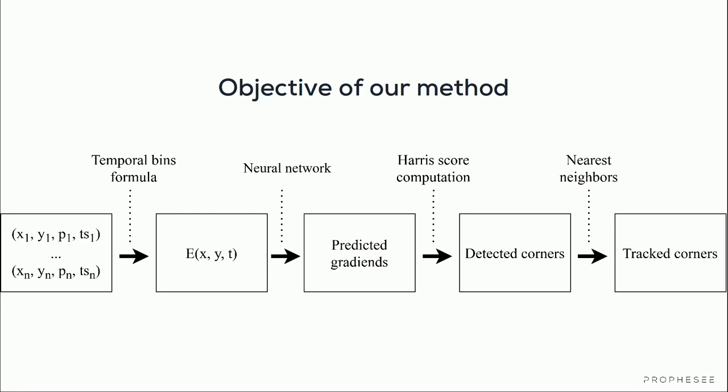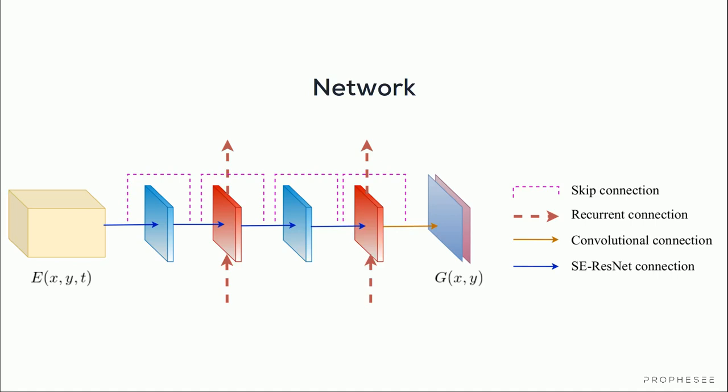Predicting the image gradient is done with a simple and shallow convolutional recurrent neural network composed of five layers, alternating ConvRNN layers and squeeze-and-excite convolutions. The network totals only 26,000 learnable parameters.